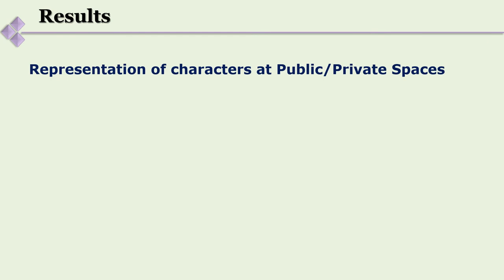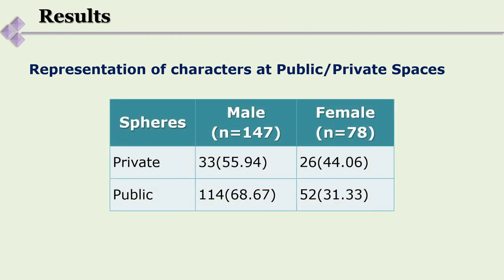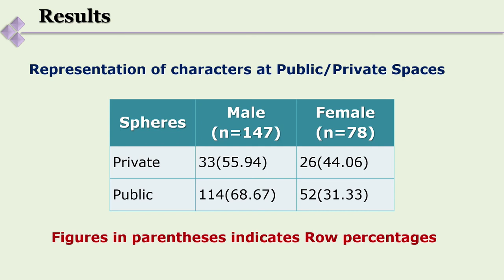Another finding looked at private and public spheres — where women and men are shown in textbooks. Almost 68% of people shown in the public sphere were men, while women were only about one third. The ratio of men to women in the public sphere was approximately 2:1. We are not talking about 17th or 15th century textbooks — these are 21st century school English language textbooks used across the country, indicating how content analysis reveals the kind of content we encounter every day in our lives.